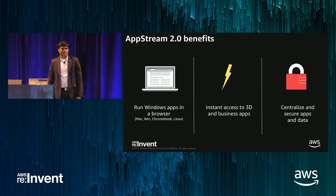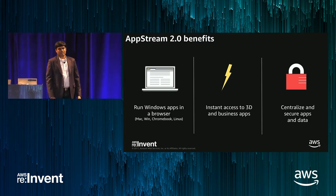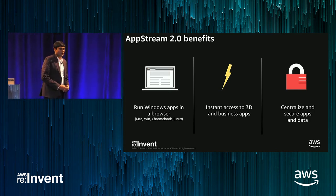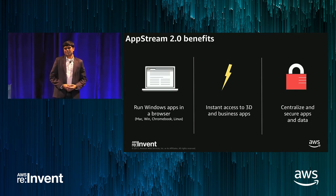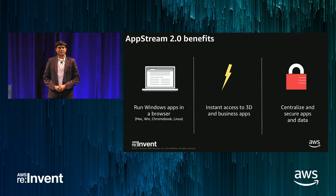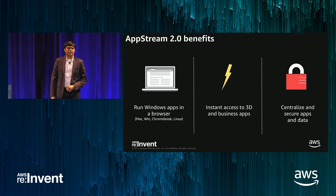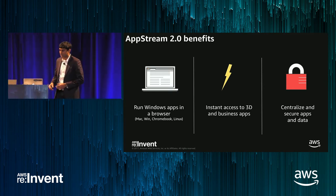For administrators, this service allows them to centralize their apps and data, so there isn't a need to deploy applications to thousands of endpoints and worry about patching them. Instead, they can put their apps on AWS on AppStream, and then allow users to connect to their data from within their applications and have all of them working within the AWS environment.